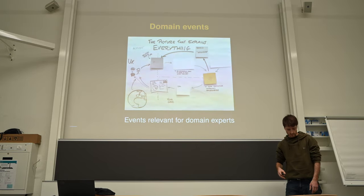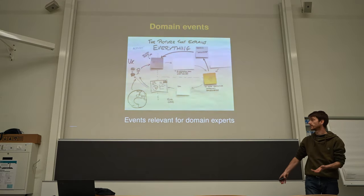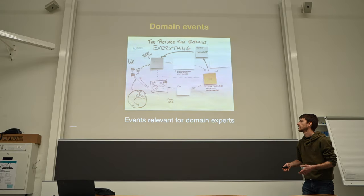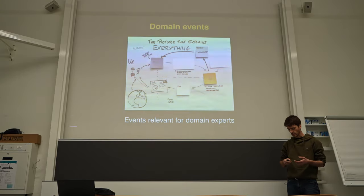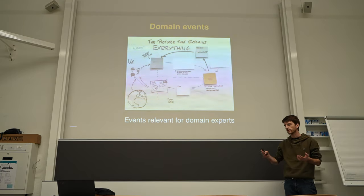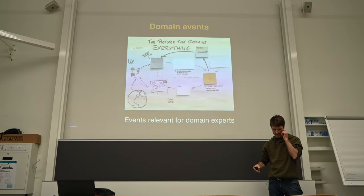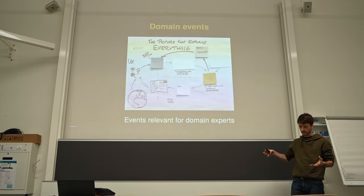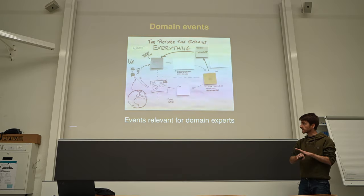The main components are events — specifically domain events — which are the changes that happen in your application throughout the life of the application itself. In particular, the events which are relevant for the domain expert and users of the platform. Some examples could be user registered, payment completed, item added to cart, or withdrawal executed correctly. Basically any state change which happens in the application that stores relevant data to decide what to do and which data needs to be shown to the user.